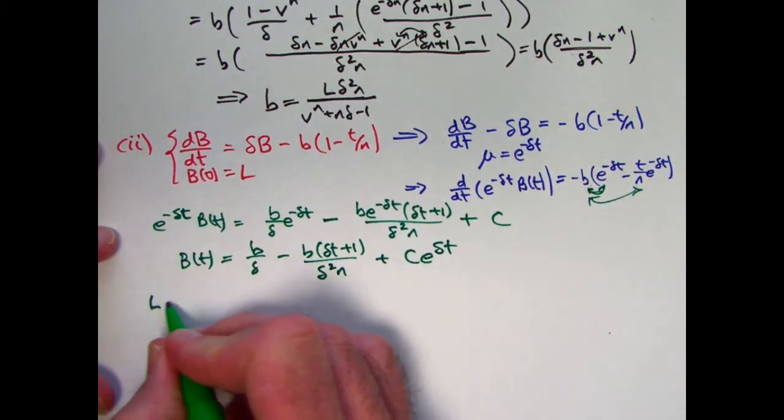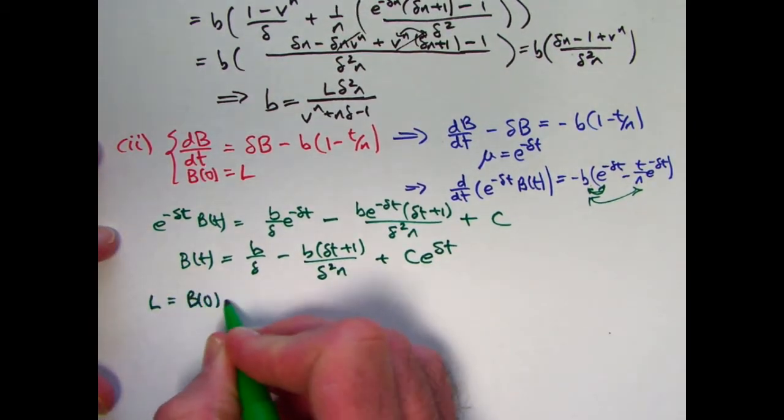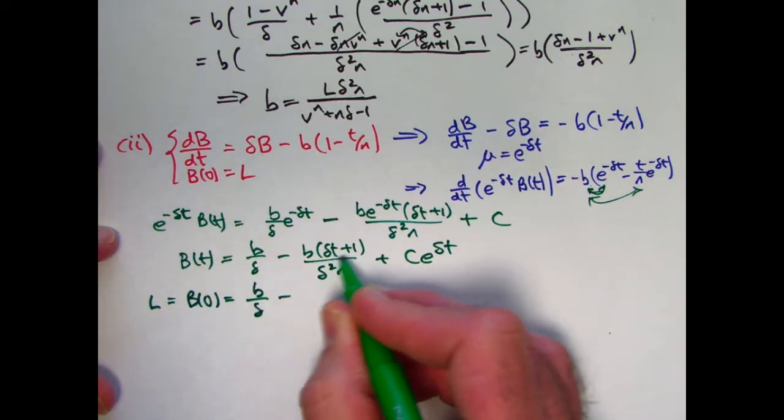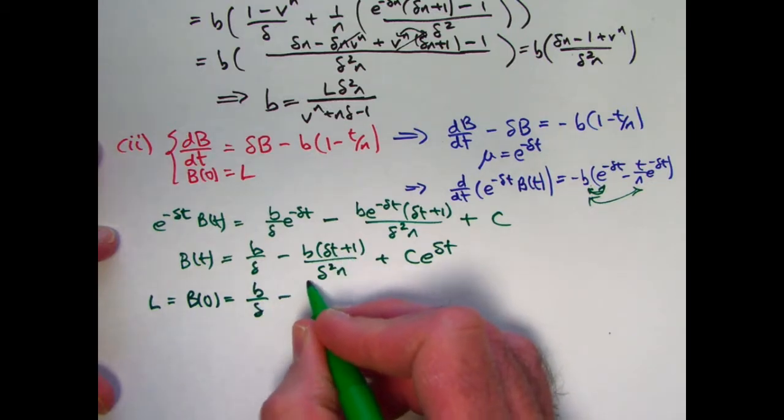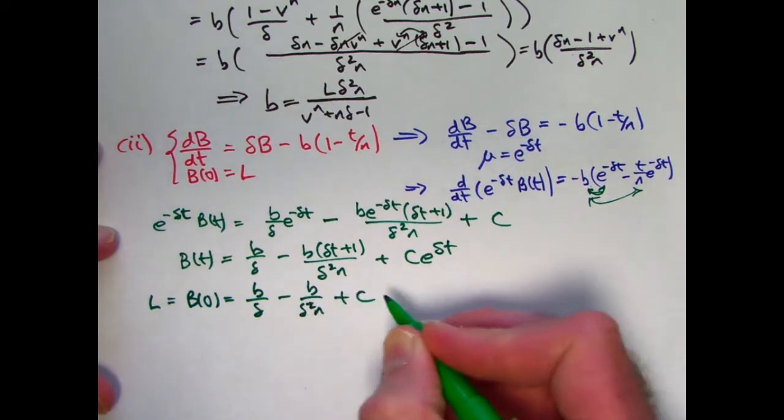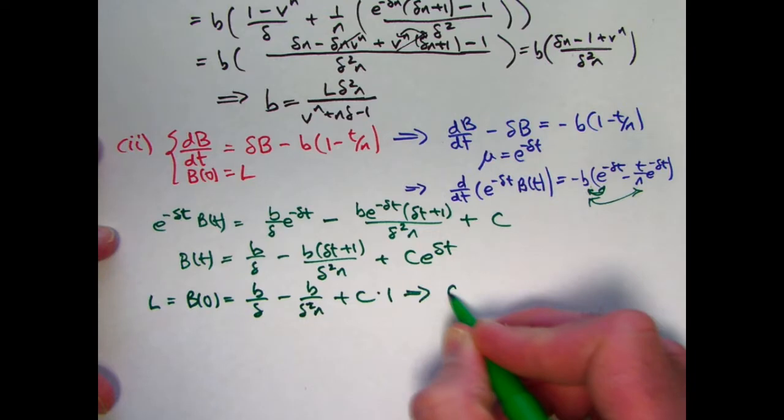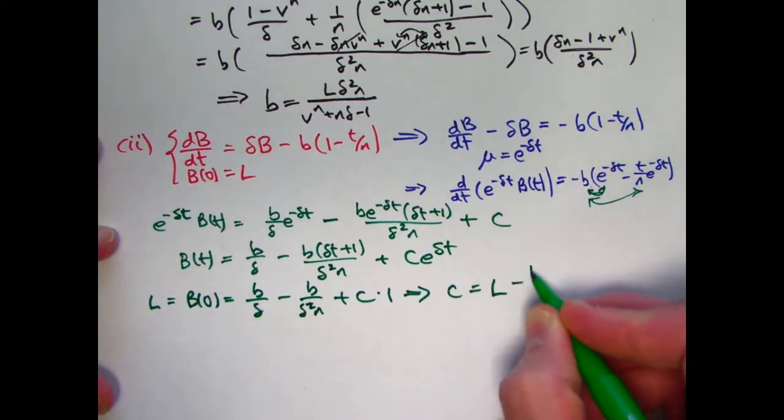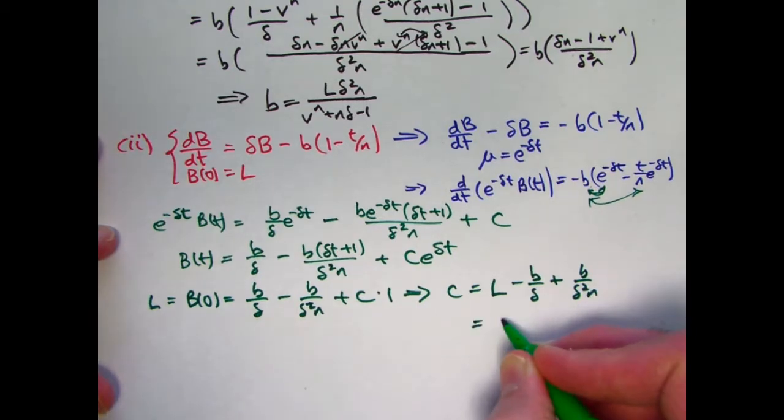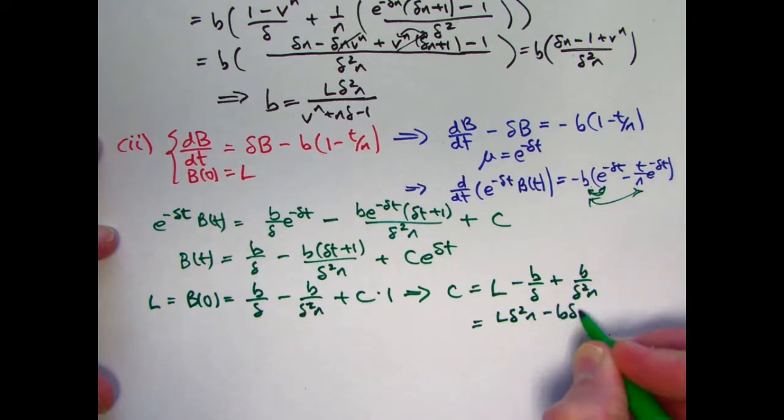Now use your initial condition. L is B of 0 is b over delta minus, that becomes 1 when t is 0, I get b over delta squared n plus c times 1. Solve for c. C is L minus b over delta plus b over delta squared times n. Get a common denominator of delta squared times n.